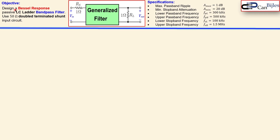Our objective is a Bessel response design of a passive LC ladder filter configuration for a bandpass filter, and we need to use the 50-ohm double-terminated shunt input circuit. The generalized filter has source and load resistors that are both one ohm normalized, and we will see shortly what we need to do with these values in our final design.